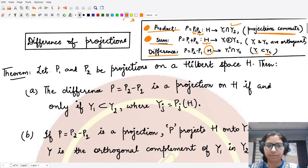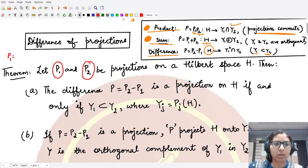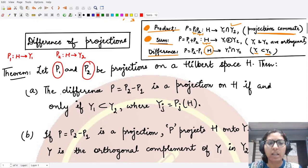It tells us under what conditions the difference projection is a projection. In this case you can assume that we are given P1 and P2 as two projections, which are defined on Hilbert space. We'll be calling P1 from H to Y1 and P2 from H to Y2. These are two projections that are given to us. Then they are saying if we define the difference projection by the letter P, that is P2 minus P1.